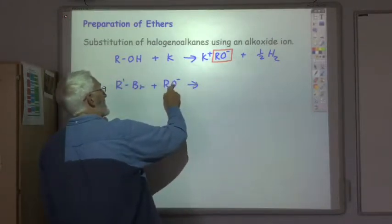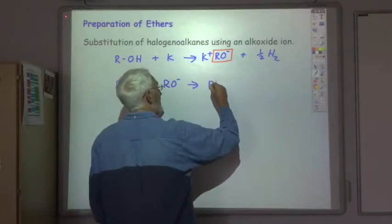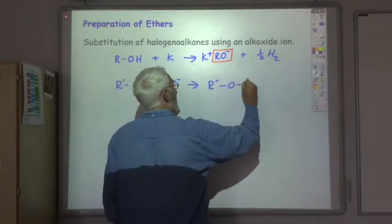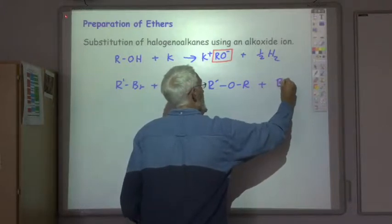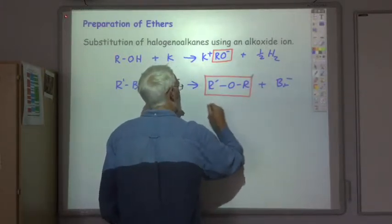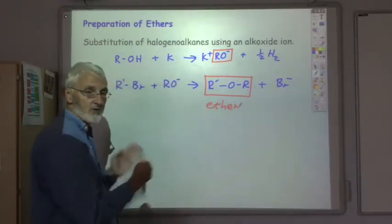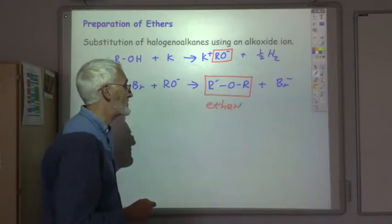The OR minus swaps with BR and you get R-O-R' and that is our ether.